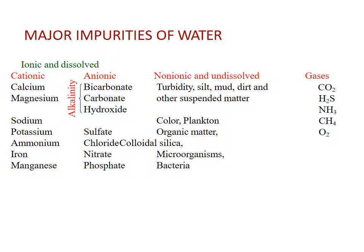Major impurities of water are divided into two parts: ionic and dissolved impurities, and non-ionic and undissolved impurities. A third type may be gases — CO2, H2S, CH4, O2 — which may be dissolved in water. Non-ionic and undissolved impurities include turbidity, silt, mud, dirt, and other suspended matter.